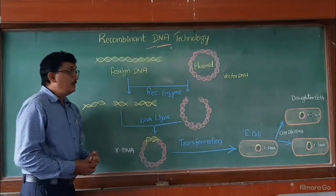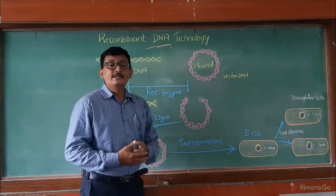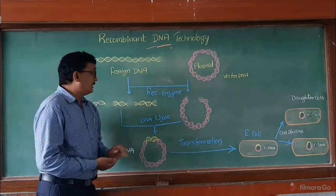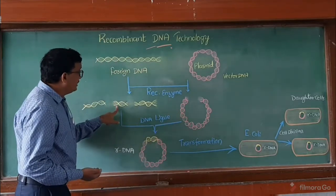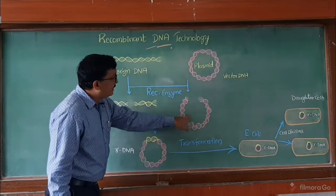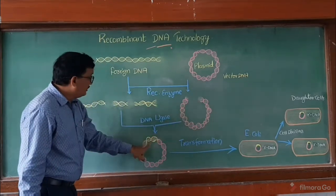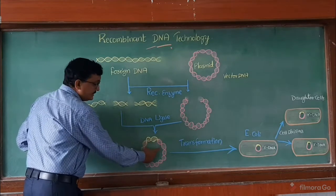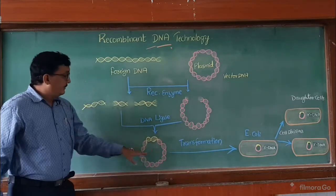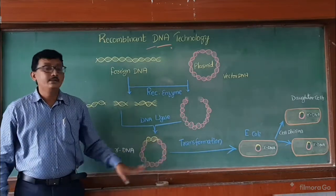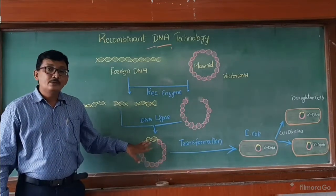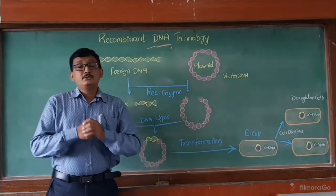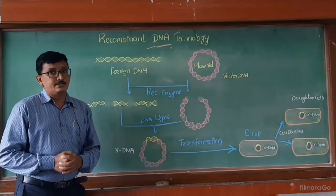In the next step, we are using an enzyme — DNA ligase. DNA ligase ligates the two different DNAs. This gene is going to combine with the plasmid. Whenever you use DNA ligase, the gene of interest and the plasmid DNA are both fused together; they form into a single circular DNA. This is called recombinant DNA. In this recombinant DNA, we can see DNAs of two different organisms.